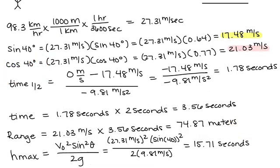To find time and a half, we subtracted 0 meters per second minus 17.48 meters per second and divided it by negative 9.81 meters per second squared and got 1.78 seconds. To find the full flight time, we multiplied it by 2 and got 3.56 seconds.